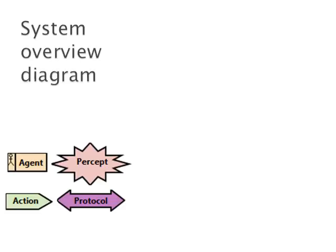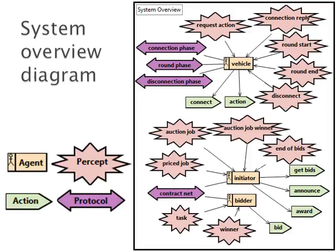The system overview diagram ties together the agents, events, and shared data objects. Agents perform actions, receive percepts, play roles, exchange messages, and participate in protocols. Protocols define interactions between agents in terms of the allowable sequence of messages passed between them, and define interactions with things outside the system. In this system overview diagram, we have vehicle, initiator, and bidder as agents. As limitations, we found that protocols and actors cannot be visually connected in any diagram except in the sequence diagrams. Moreover, it is not possible to define what triggers or initializes a protocol, as this information cannot be included in any diagram.